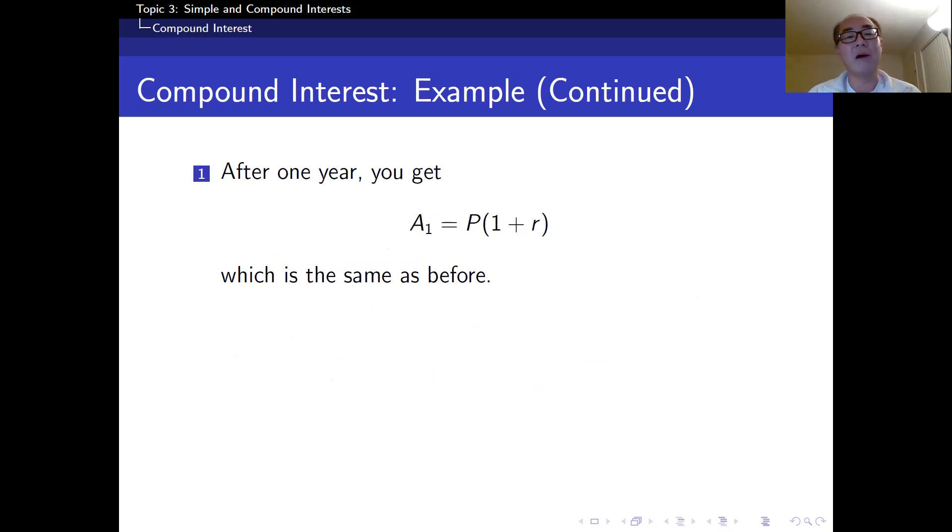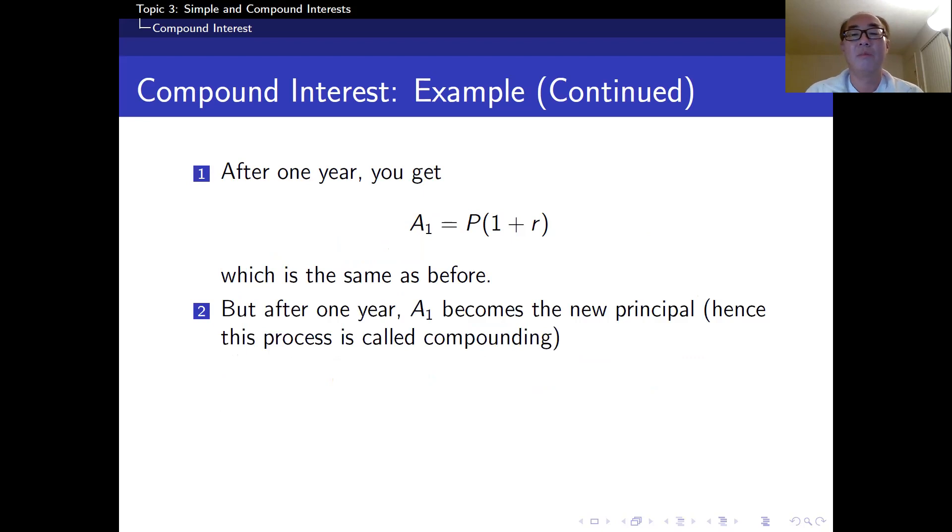So here's a formula. After one year, and we know this already, A sub 1 is equal to P times 1 plus R. That is the same as before. But after one year, what's going to happen is that this A sub 1 becomes a new principle. That's why it's called compounding. So look at this. A sub 2 is equal to A sub 1 times 1 plus R. So 1 plus R is the same. But now for the second year, the principle is now A sub 1, not P.